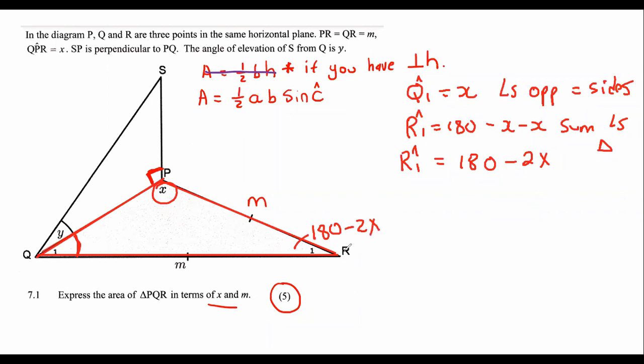Okay. So, now everything is looking good. Because now we can get the area. We can say that the area will be a half M times M times by the sin of the angle, which is 180 minus 2X.